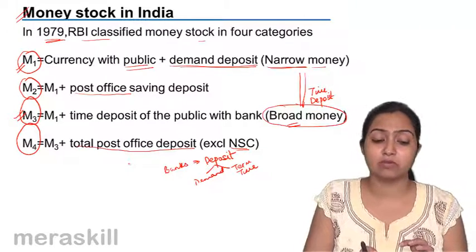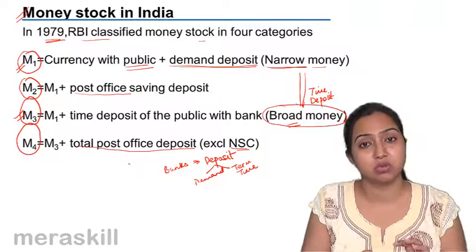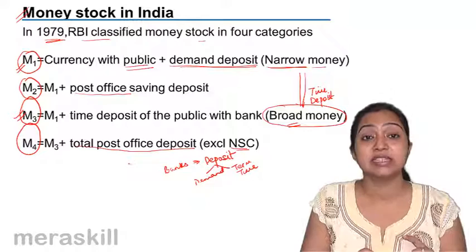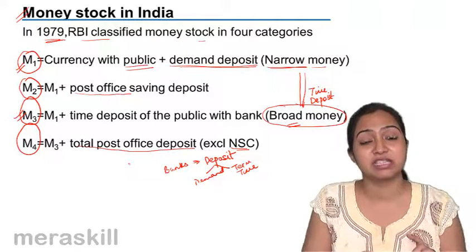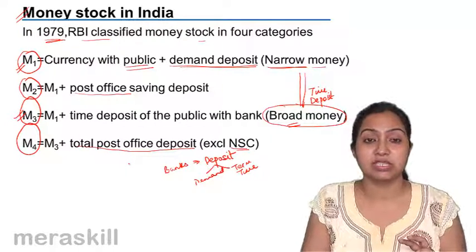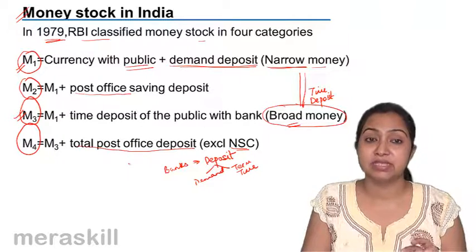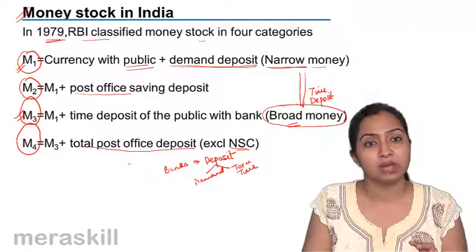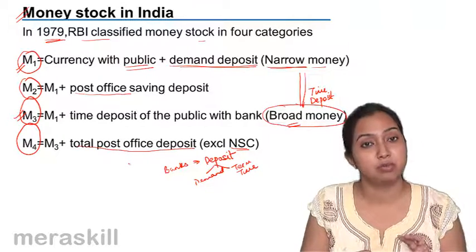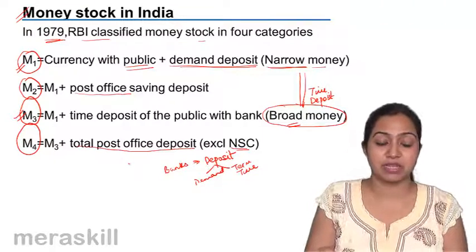From an economic point of view, M1 and M3 are the most important. M1 is narrow money, which means currency plus demand deposits. M3 means M1 plus time deposits, which is the broad money. Please remember that.